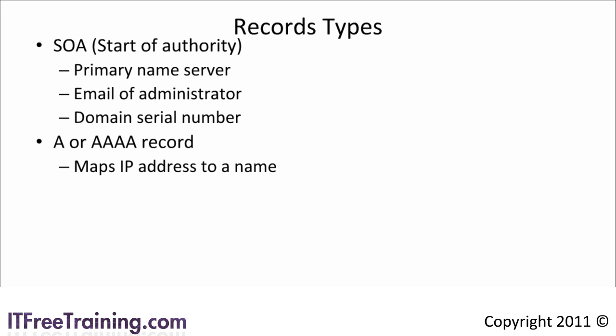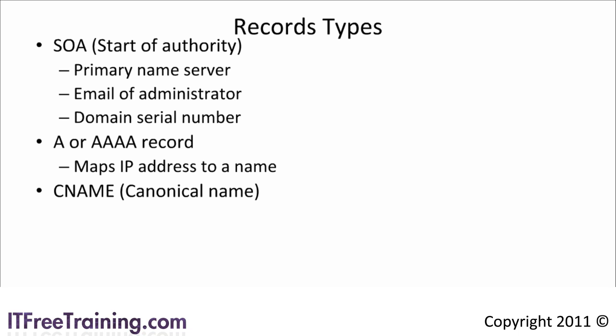In some cases you will want to map a service to a host name — for example, you may want to map the name 'mail' to your general application server called app1. You could create a new A record for the host; however, if the IP address of that host were to change, you would need to update two records. To help with administration, DNS allows you to create an alias record called a CNAME, which stands for canonical name. The CNAME record points to an A or Quad A record, and when you attempt to resolve a CNAME record, the corresponding A or Quad A record is returned.